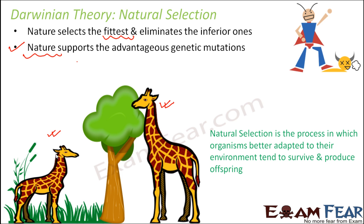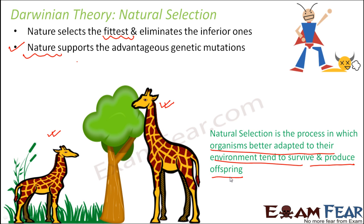Natural selection is the process in which organisms better adapted to their environment tend to survive and produce offspring. When they produce offspring similar to themselves, their population keeps increasing. So better-adapted organisms are always supported by nature.